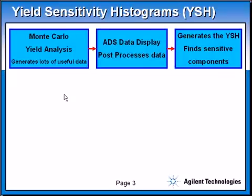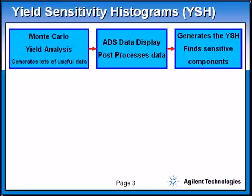When designers run Monte Carlo yield analysis on their circuit, ADS generates lots of useful data. All kinds of data are accumulated and saved in a dataset based on all the variations and all the Monte Carlo yield runs. ADS data display has the capability to post-process all this data. This is what happens with the yield sensitivity histograms — it takes the Monte Carlo yield analysis data, post-processes it, and generates the yield sensitivity histograms to find the sensitive components for you.